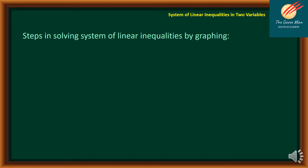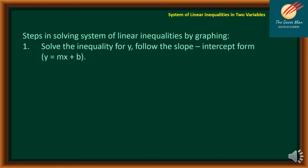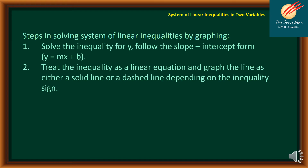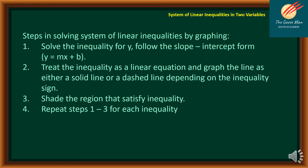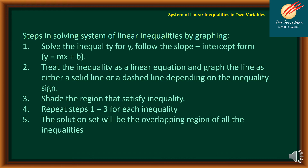These are the steps in solving a system of linear inequalities by graphing. Step number one: solve the inequality for y, following the slope-intercept form y = mx + b. Number two: treat the inequality as a linear equation and graph the line as either a solid line or a dashed line depending on the inequality sign. Number three: shade the region that satisfies the inequality. Number four: repeat steps 1 to 3 for each inequality. And finally, the solution set will be the overlapping region of all the inequalities.